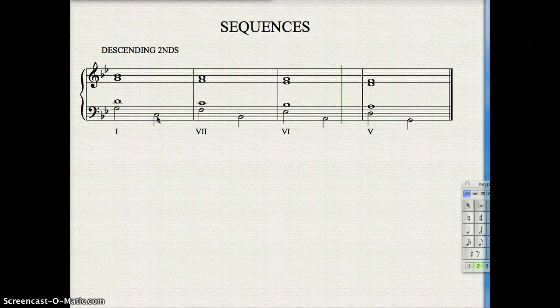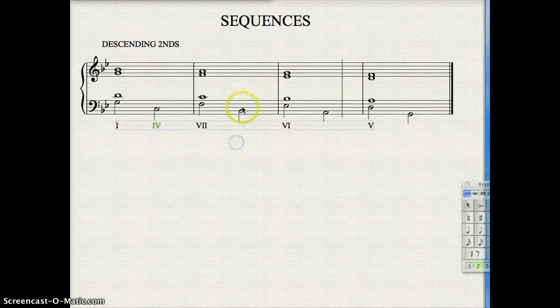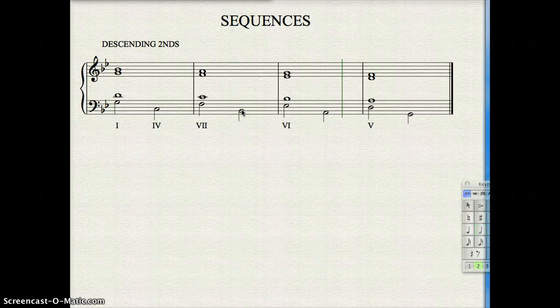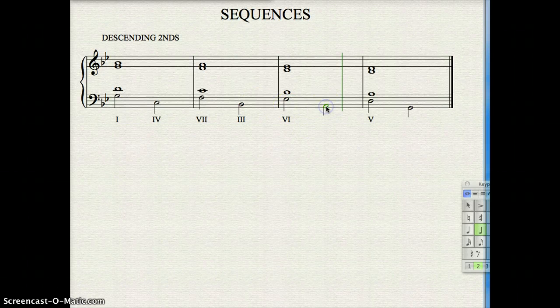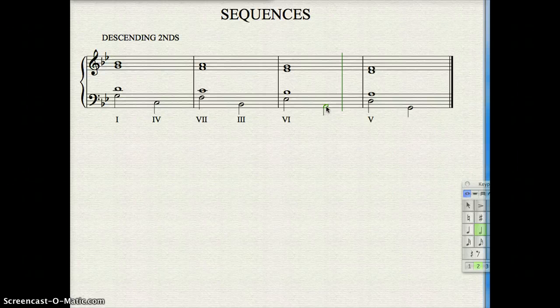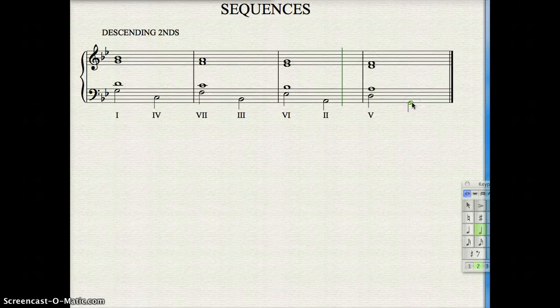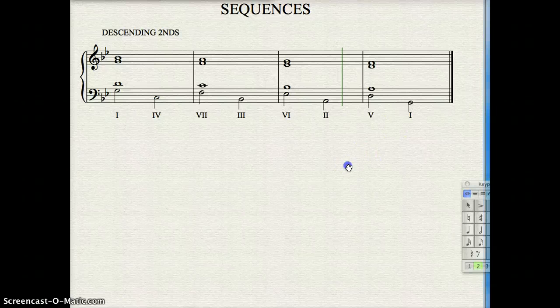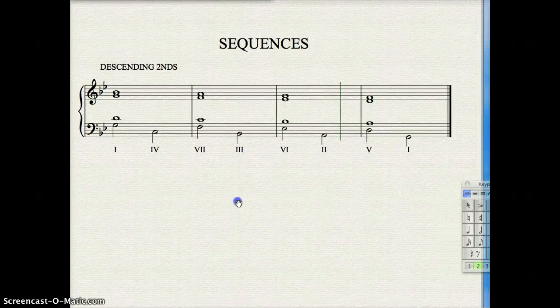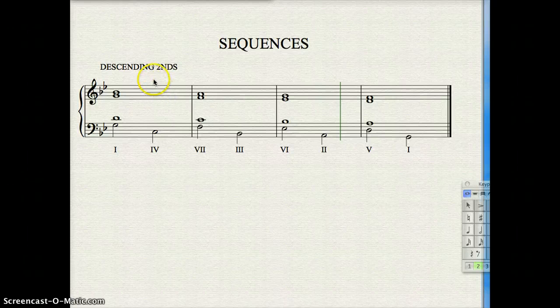So that's 1 to 4, 7 to 3, 6 to 2. And in this case, in the minor, the 2 is the diminished triad, and yet still you can write this progression in root position. The weakness of the 2 chord is mitigated by the sequential pattern.